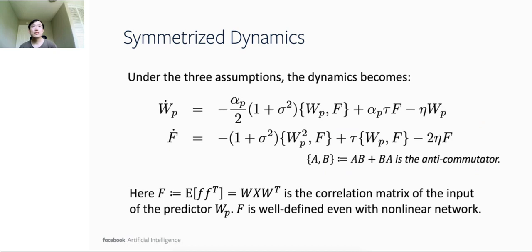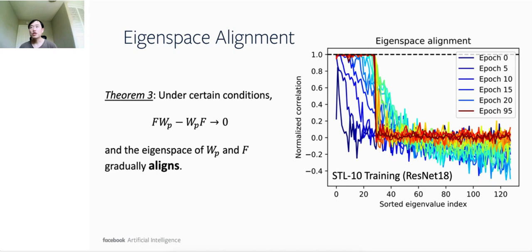With all three assumptions, we now can reduce the training dynamics to the following two equations, where F is the correlation matrix of the predictor input. Note that we replace the dynamics of W with that of F. This is because the correlation matrix F is well defined even if the network is non-linear. This will make our change from gradient descent algorithm to DirectPredict much easier. Now we have the following theorem that shows that the eigenspace of the predictor and the correlation matrix F will gradually align if certain conditions hold.